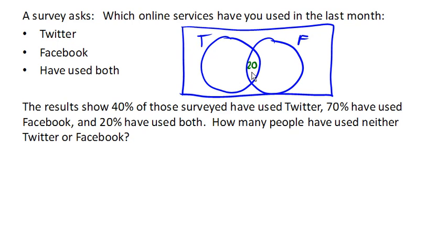So that leaves 20% who have just used Twitter. Out of our Facebook folks, if we have 70% who have used Facebook, 20% have already used both. And so we have 50 who have only used Facebook.